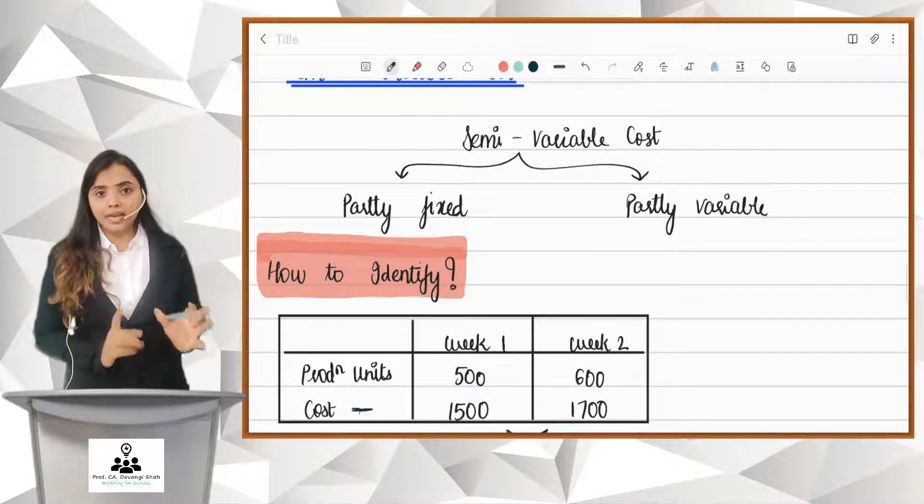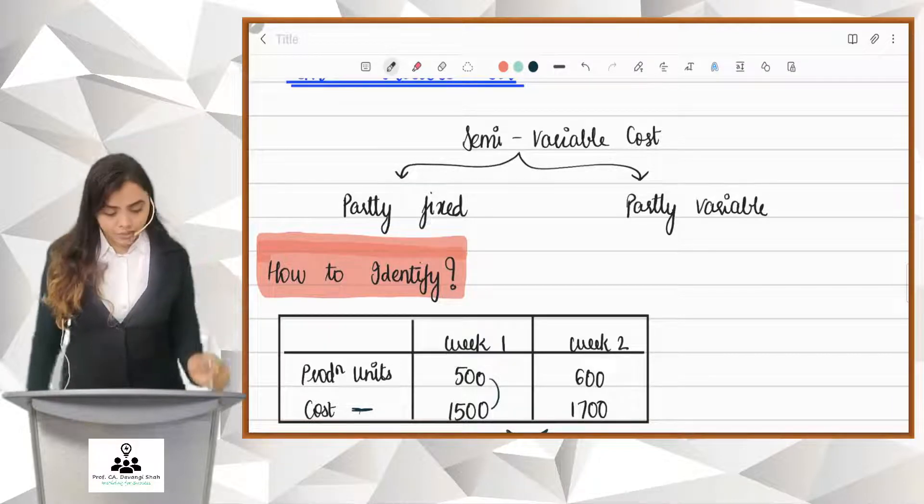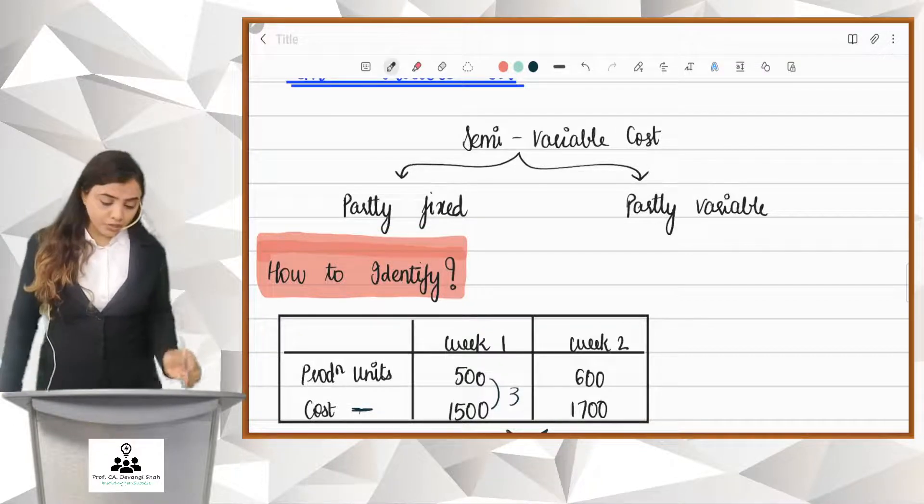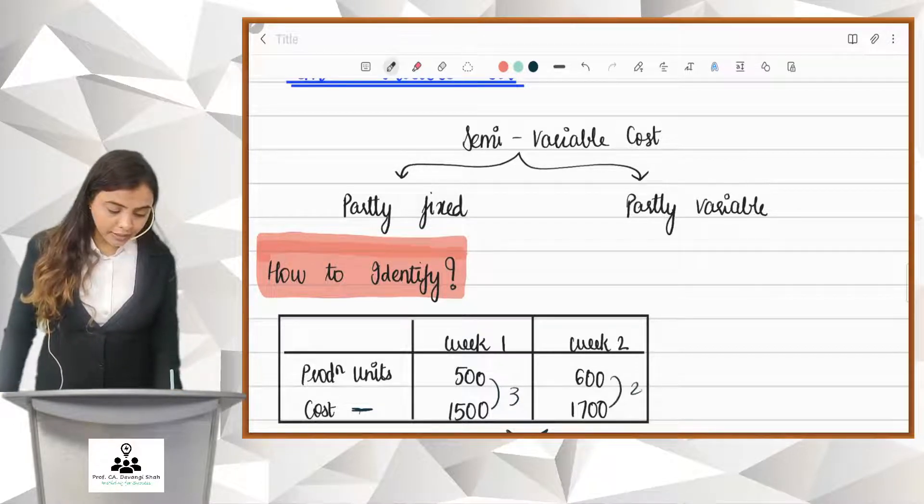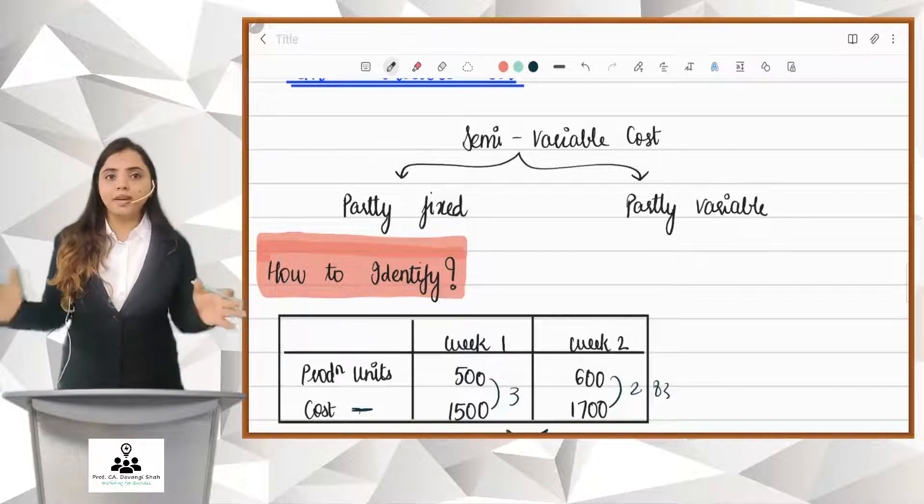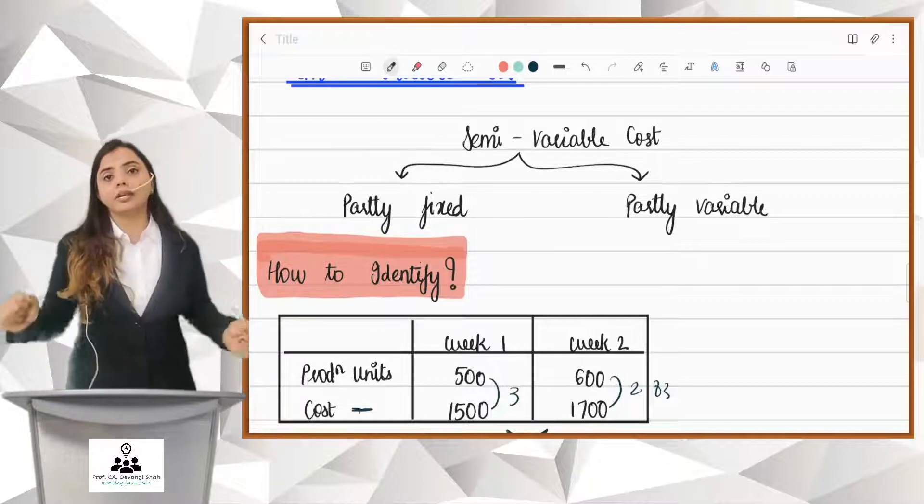So for that, we need to calculate per unit. In week 1, 1500 unit cost for 500 units, you get 3 per unit. And week 2, 1700 cost for 600 units, you get 2.83. Is per unit constant? 3 and 2.83, is it constant? No. And because it is not constant, friends, it is not a variable cost.